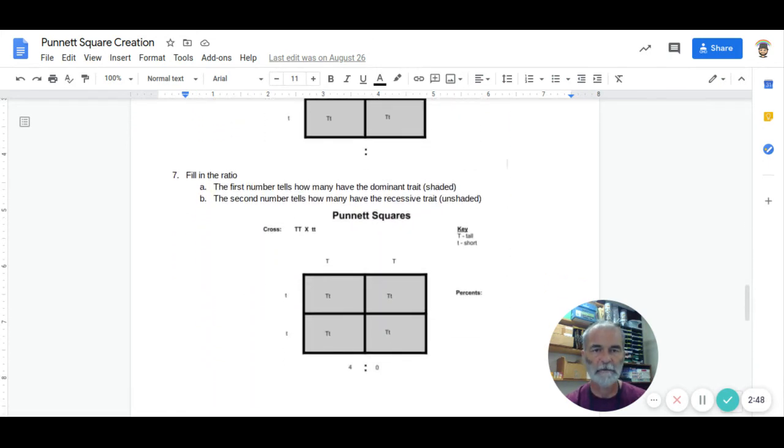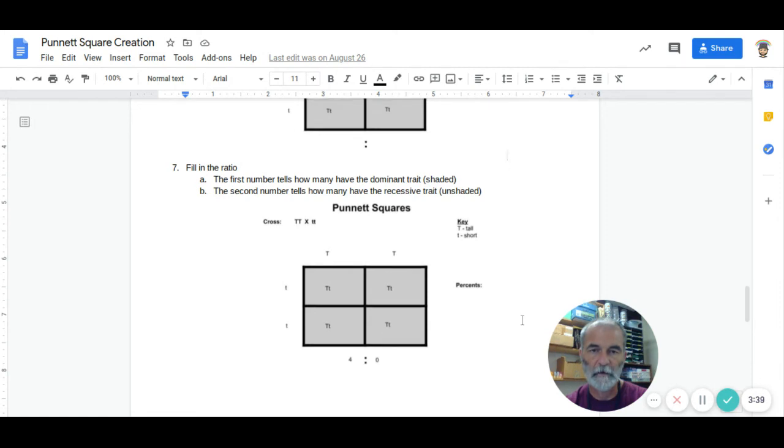Next we look at the ratio. Below my squares, I have these two dots. The ratio is always the dominant trait to the recessive trait. Whether it's tall and short, green and yellow, or flowers at the tips or in the middle, the first number is how many are dominant, and the second number is how many are recessive. Our key says dominant is tall and recessive is short. All of them are shaded, which means all four are dominant, no recessive. A big mistake people make is putting four and four, because they see four capital letters and four lowercase letters. But it doesn't work that way. You go by genotypes, not by alleles. So, four out of four are tall, and zero out of four are short.